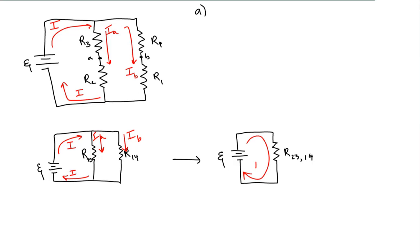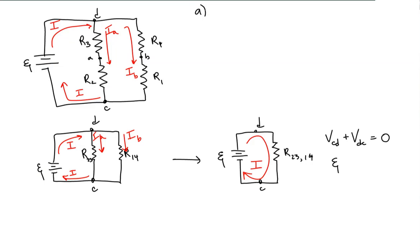The current I leaving the battery will eventually return to it. I'll label the battery terminals as points C and D. Using Kirchhoff's voltage rule around the complete loop, the potential from C to D plus the potential from D to C equals zero. The potential across the battery is the given EMF of 24 volts.